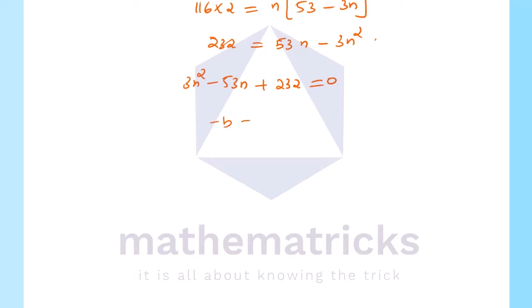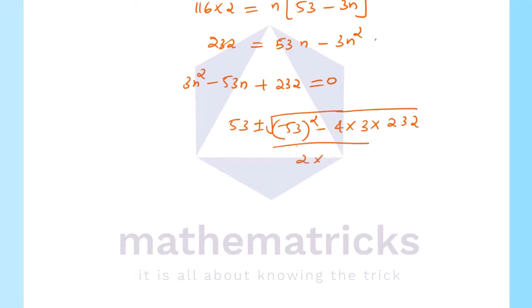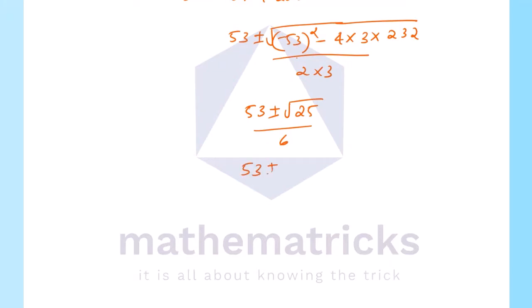Using the quadratic formula: n = [53 ± √(53² - 4×3×232)] / (2×3). Calculating the discriminant gives √25, so n = (53 ± 5) / 6.